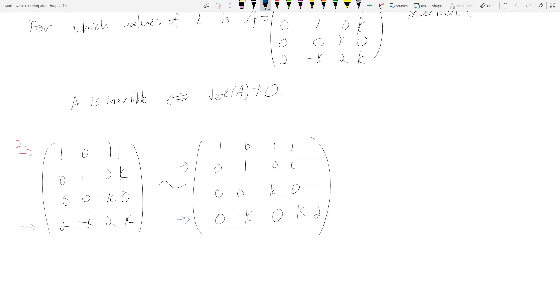This essentially zeroes out that entry, so we get an upper triangular matrix [1 0 1 1; 0 1 0 K; 0 0 K 0; 0 0 0 K²+K-2]. K times K is K squared, and you add, so this becomes K squared plus K minus 2.